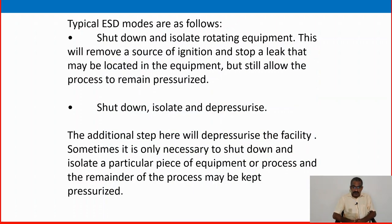Typically, ESD modes are as follows. First, shutdown and isolate rotating equipment — this removes a source of ignition and stops a leak that may be located in the equipment, but still allows the process to remain pressurized. Second, shutdown, isolate, and depressurize — the additional step will depressurize the facility. Sometimes it is only necessary to shut down and isolate a particular piece of equipment or process, and the remainder of the process may be kept pressurized.